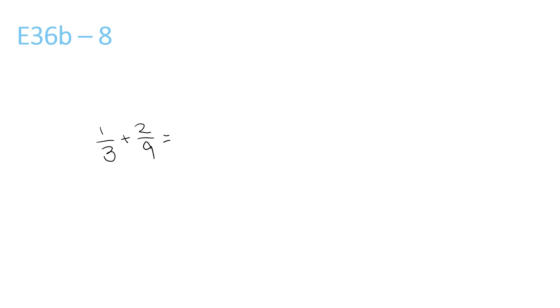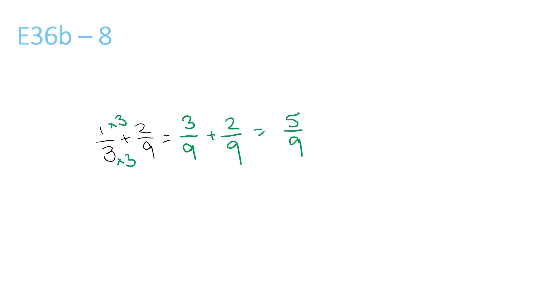The LCM of 3 and 9 is 9, so you times this top and bottom by 3 to get 3 over 9, plus 2 over 9. Now you add the top numbers to get 5 over 9.